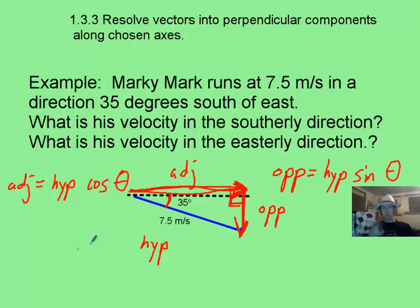Okay, take a minute, see if you can calculate these values here, and you should get that the horizontal velocity, the velocity in the easterly direction, is going to be your 7.5 times the cosine of 35 degrees, which I got as about 6.1 meters per second.